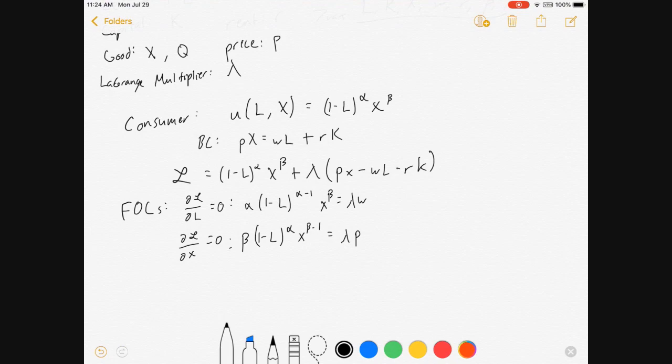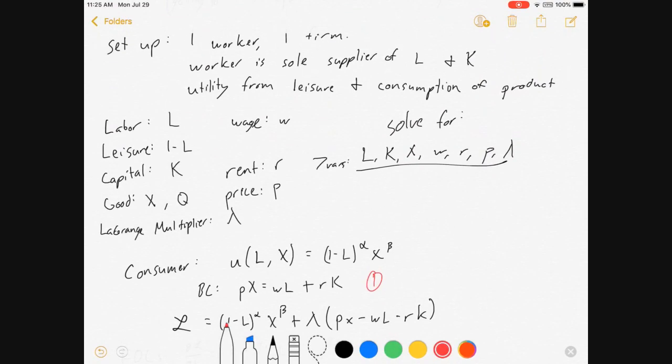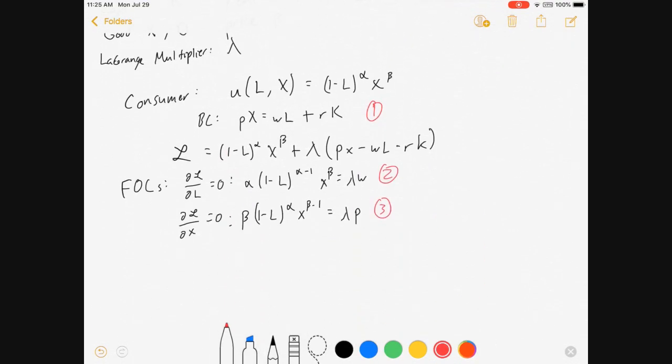Okay, so our consumer problem is set up. We've done all the economics here, and I've already got three of my equations I need. We've got a budget constraint, and we've got two choice-making equations or two first order conditions. Those three equations are the first three that I need in order to solve for L, K, X, W, R, P, and lambda.